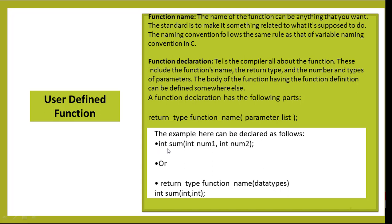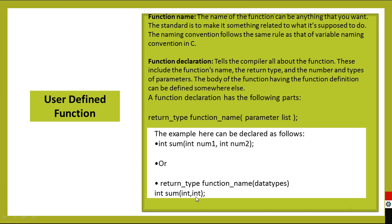'int' is the return type, 'sum' is the name of the function, 'int num1', 'int num2' are the parameters. We can also declare a function using return type, function name, and just the data types: 'int sum(int, int)', meaning two parameters of integer type are there.